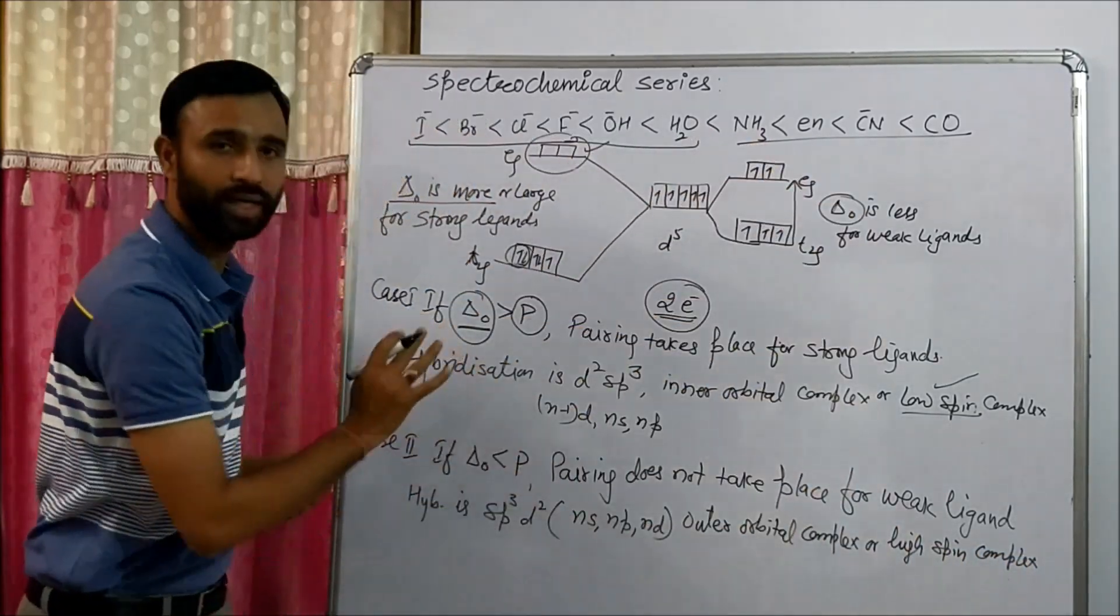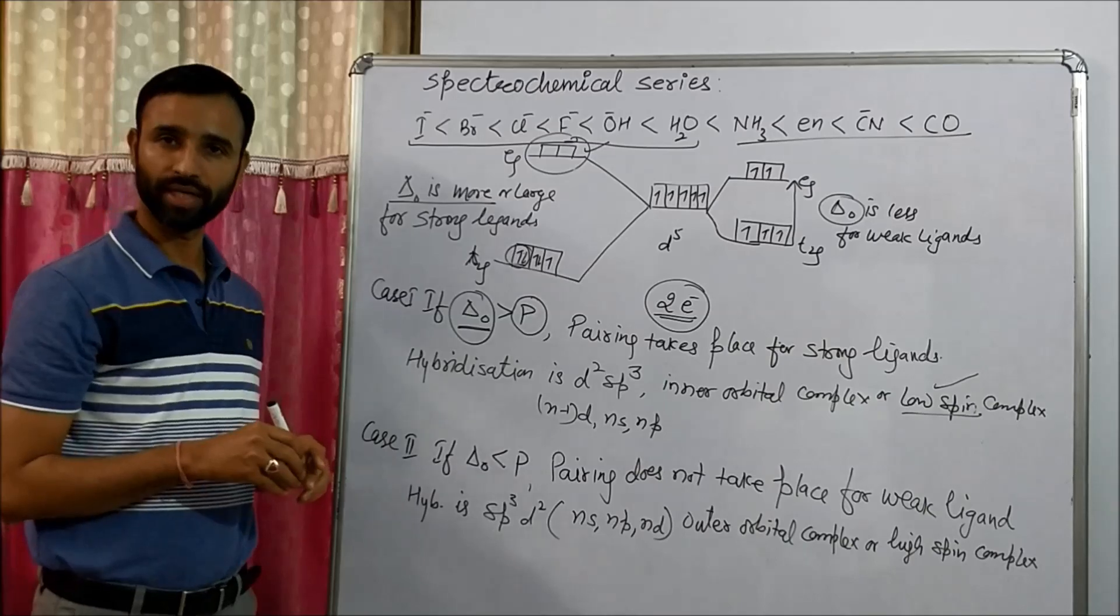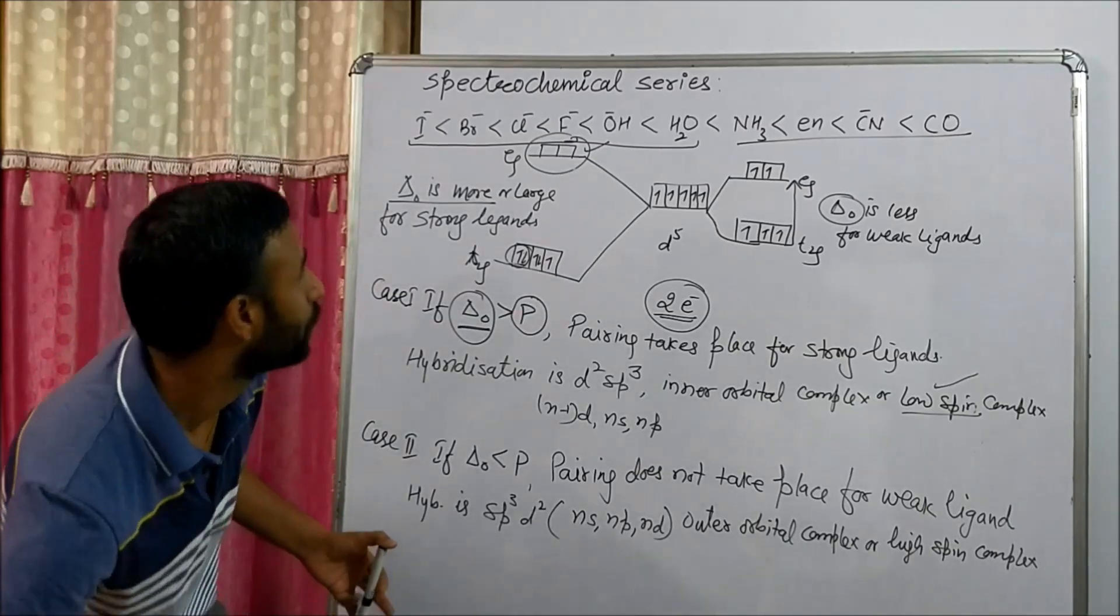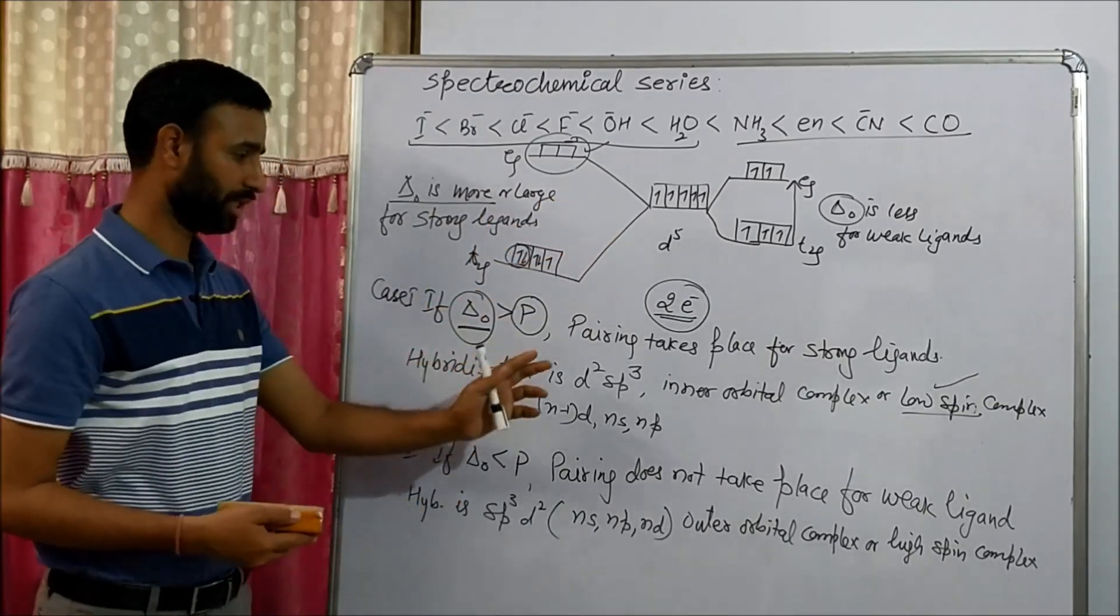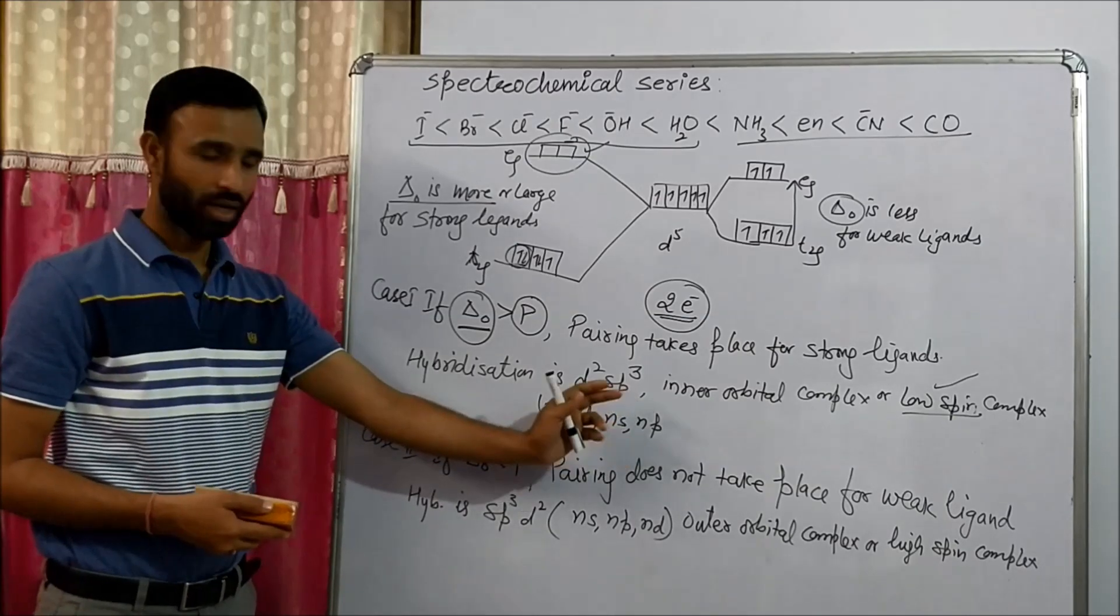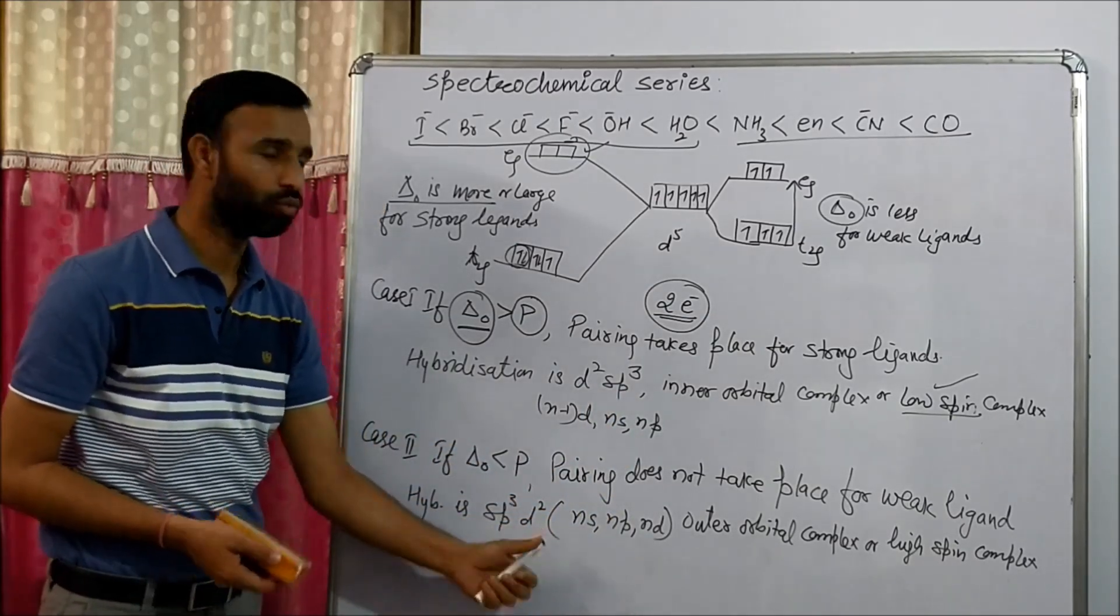If you know this theory, then you can easily identify which orbital, which complex has d2sp3 hybridization and which has sp3d2. For example,